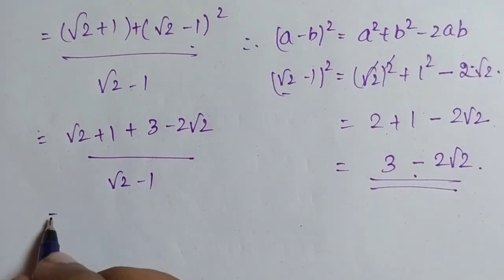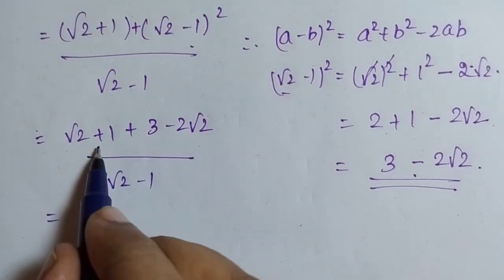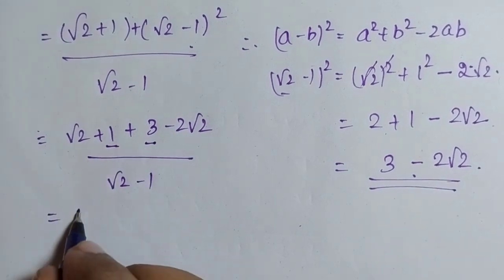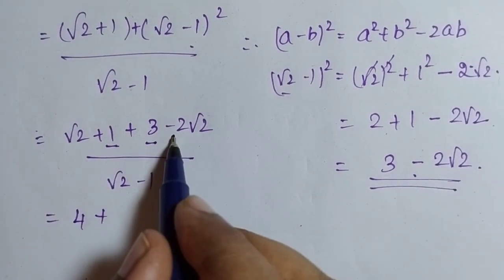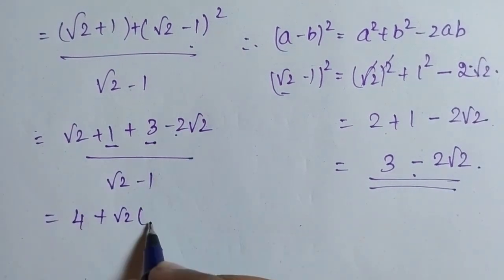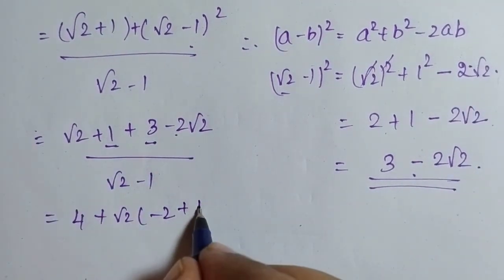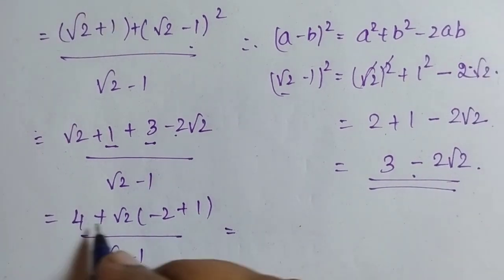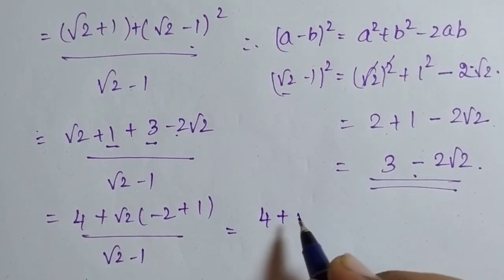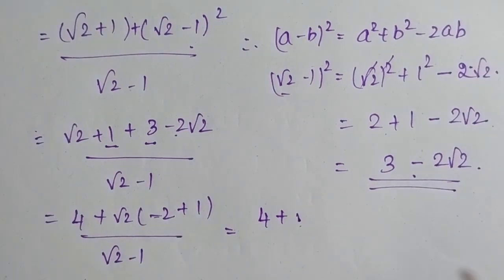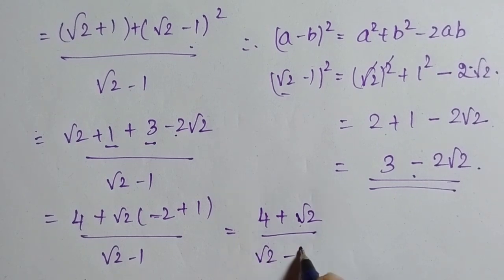Now simplifying the numerator: √2 + 1 + 3 − 2√2. Combining constants: 1 + 3 = 4. Combining √2 terms: √2 − 2√2 = −√2. So the numerator is 4 − √2... giving (4 + √2) / (√2 − 1).